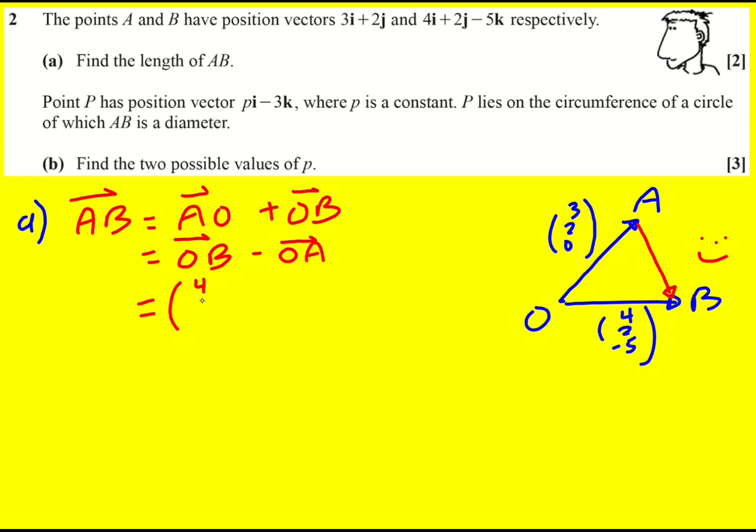So that means it's going to be 4, 2, minus 5, minus 3, 2, 0, which gives 1, 0, minus 5 for AB.